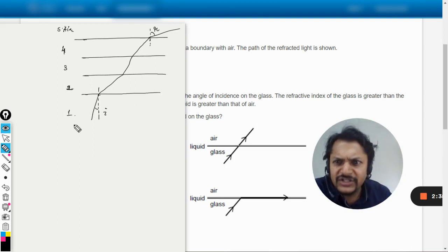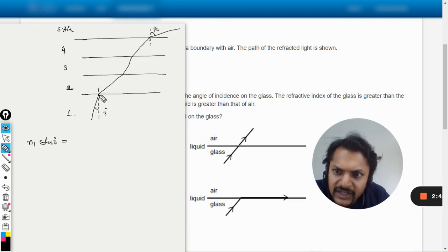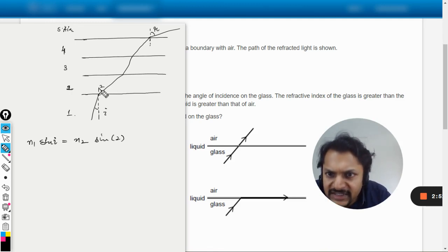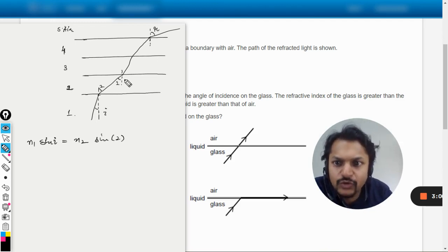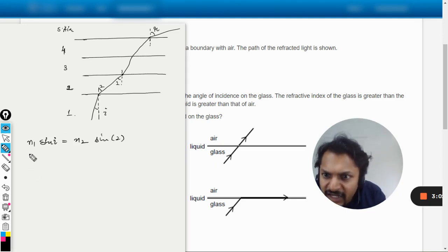At all these interfaces we apply Snell's law. Let us do a very quick process. Here it will be n1 sine i equals n2, the refractive index here, and I'm calling this angle as theta 2, so it will be sine of 2. This angle will be equal to this angle because these two are alternate interior angles. At the second interface it will become n2 sine 2.